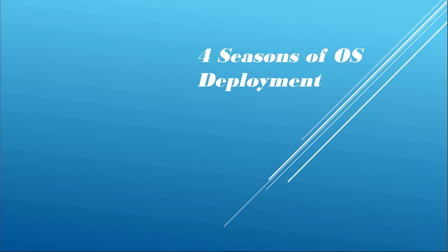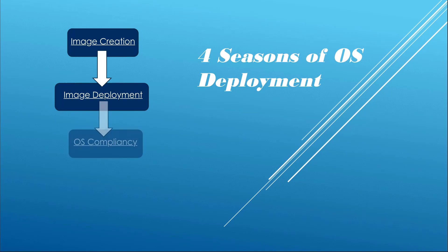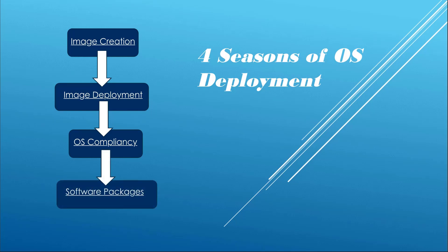Today we're going to talk about what I call the four seasons of OS deployment. At Disney, we are storytellers by nature, so my goal is to paint you a story through different types of topics, and hopefully I'm the hero at the end. The four seasons I want to discuss are image creation, image deployment, compliancy of the operating system, and finally software packages — keeping things current with software usage, vulnerability management, and packages.